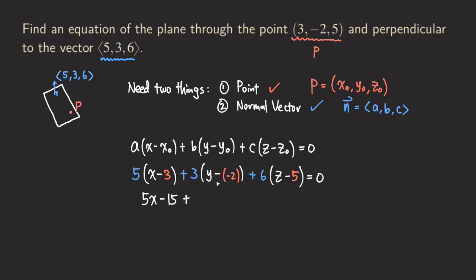And then plus this one is, this one becomes what, y minus negative 2, which is y + 2. So we have 3 times y, we get 3y, and then 3 times 2, we get 6, and then plus 6z, and then minus 30. That's equal to zero.